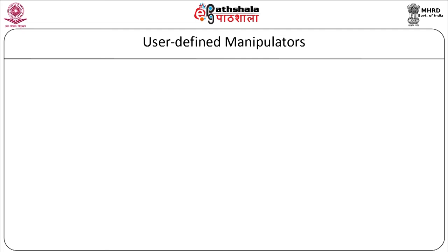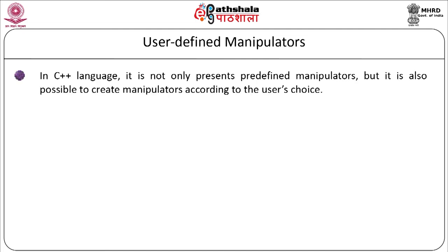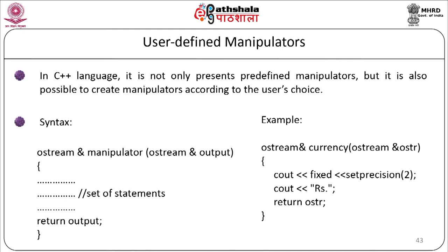User-defined manipulators. In C++, it is not only possible to use predefined manipulators — it is also possible to create user-defined manipulators according to the user's choice. The syntax is: ostream& manipulatorName(ostream& output) { set of statements; return output; }. For example: ostream& currency(ostream& ostr) { cout << fixed << setprecision(2) << 'Rupees'; return ostr; }. Here we have created a user-defined manipulator called 'currency' as rupees.